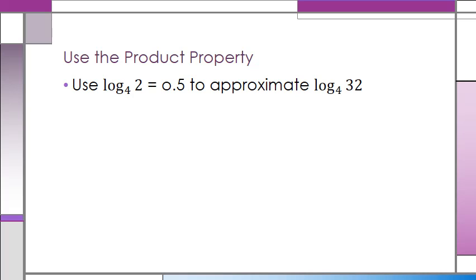We're told here that log base four of two equals 0.5 or one half, and we're going to use it to approximate the log base four of 32. Now we know one of our properties, our product property, is that when we multiply two exponentials together, we add the exponents. And that property also holds true with logarithms.